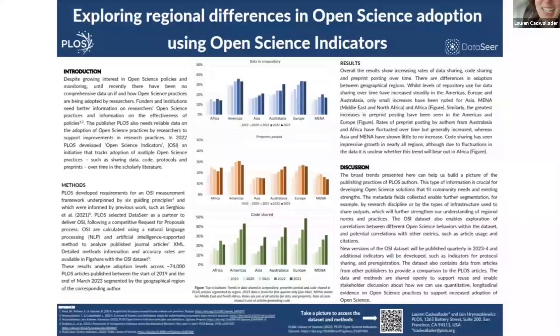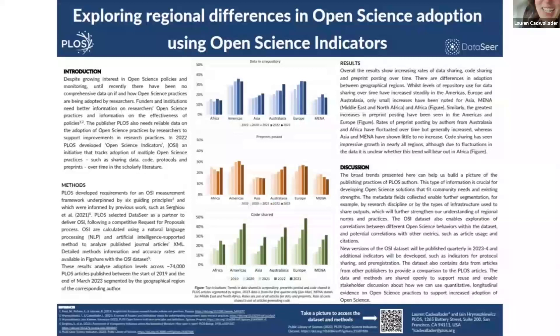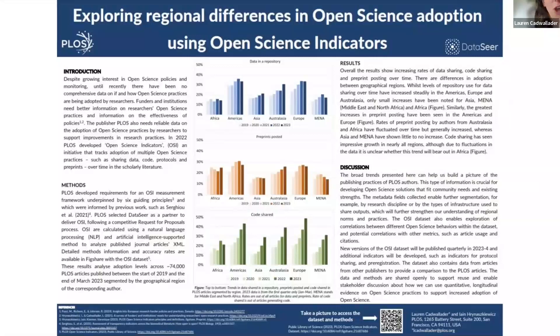Thanks, Lauren, you are up next. My name is Lauren Cadwalda. I'm from the nonprofit publisher PLOS. Our poster is using our open science indicators data set to look at regional adoption of open science practices. The open science indicators data set takes articles published by PLOS as well as comparators and looks at the different practices related to open science and whether the articles are practicing them or not. It looks at data and code in terms of whether they're being generated and shared, adds details about where they're being shared, and also looks at whether preprints are being posted. The poster uses version three of the data set — articles published between 1 January 2019 to the end of March 2023 — with about 74,000-plus articles in that collection.